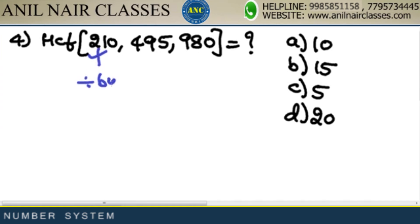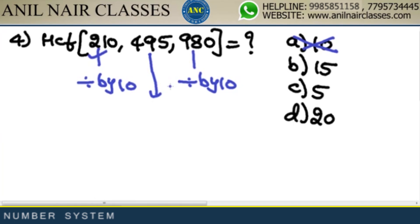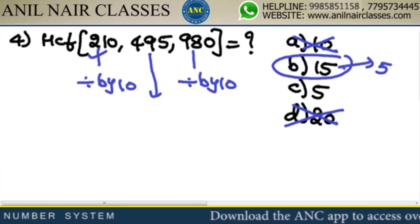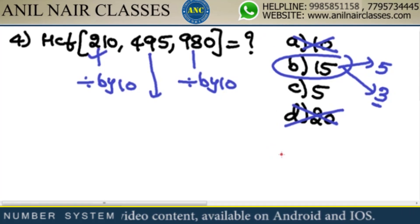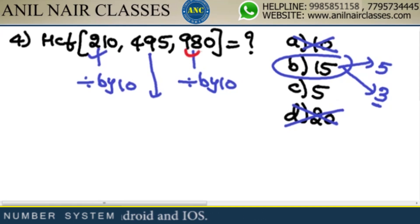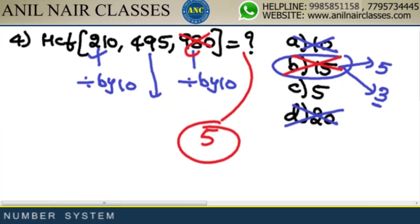210 is divisible by 10, 980 is divisible by 10 — so the answer would be divisible by 10 only if all numbers are. But 495 has unit digit 5, not 0, so 10 is not possible. For 15, a number must be divisible by 5 and 3. The digit sum of 980 is 9+8=17, which is not divisible by 3. So the answer is 5.